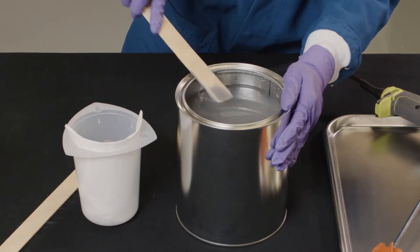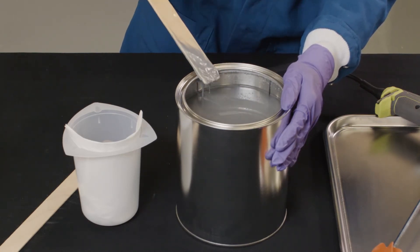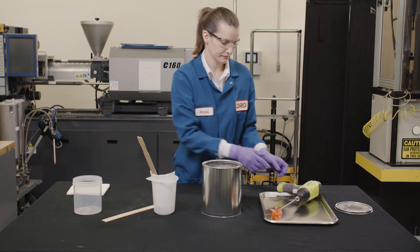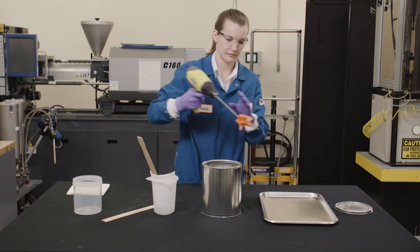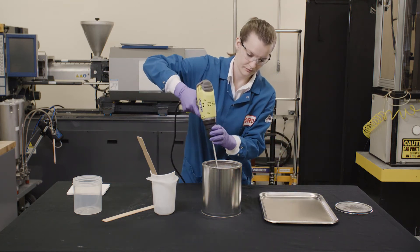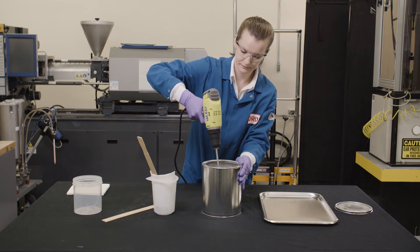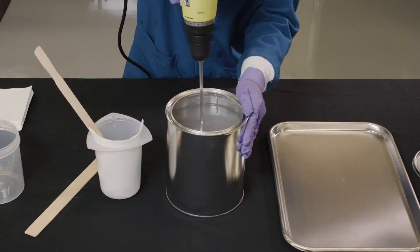Mixing can be done via manual or mechanical means. For manual builds or small-scale manufacturing, a Jiffy mixer attachment for a drill is an inexpensive and convenient method for homogenizing the material. Larger volume applications will require drum mounted mixing or barrel rollers.